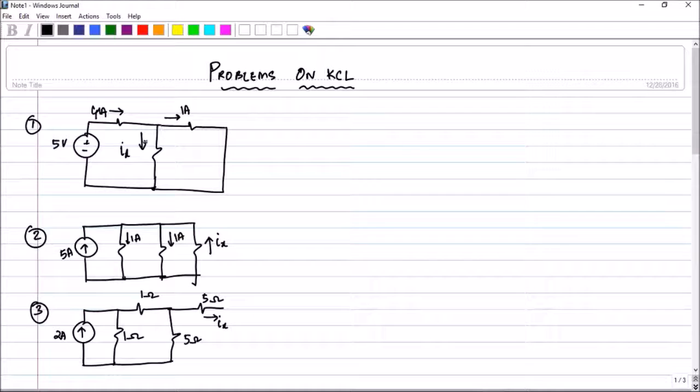In this problem, it is a straightforward problem. You have to find Ix where the current is given to be 4 amperes entering and 1 ampere entering. Let us select the node. I would like to select this node because here we are having a junction in which all 3 currents are in. Other nodes are, one node is here and another node is here. So you are having actually 3 nodes in this circuit.